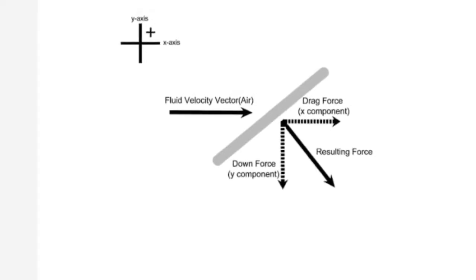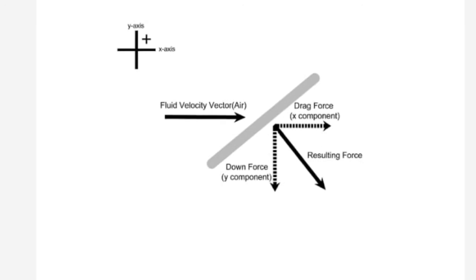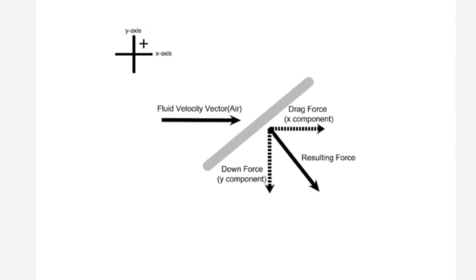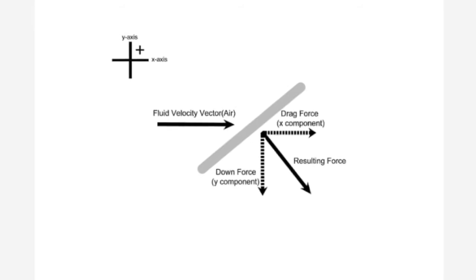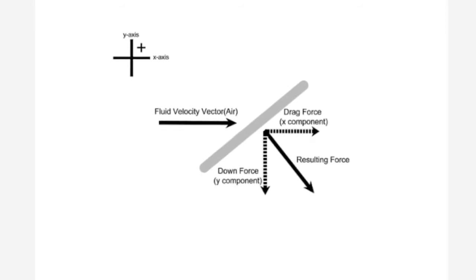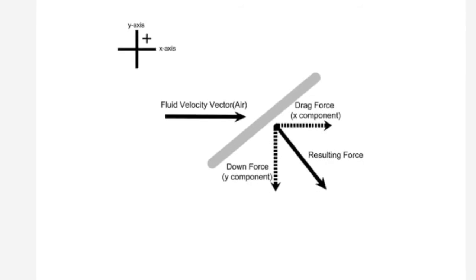This effect of downforce makes a Formula 1 car able to travel upside down in a tunnel at a speed greater than 130 km/h. That is why there is a drag reduction system. With downforce, the drag is too much, which limits top speed.